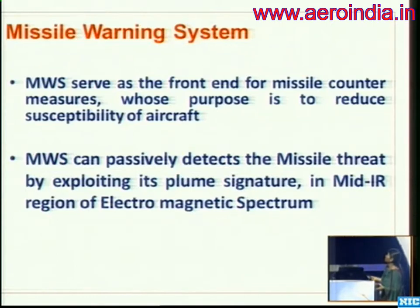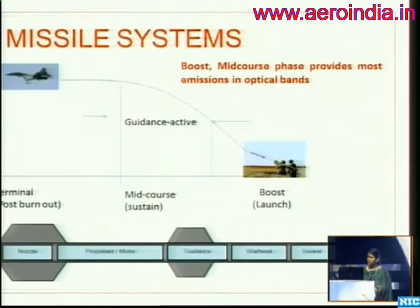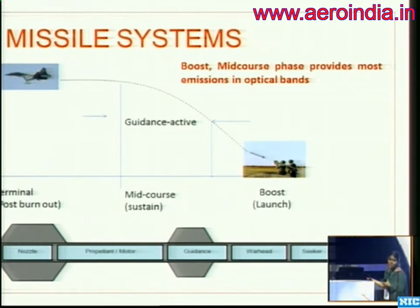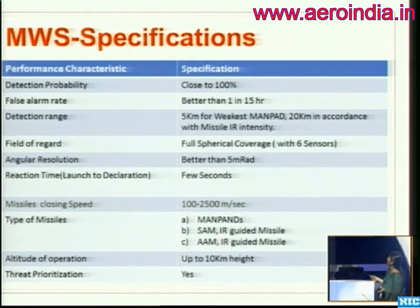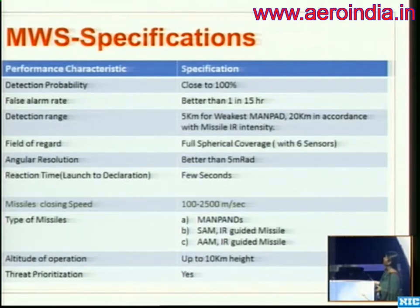The missile warning system detects missile threats by exploiting their signature in the mid-IR region of the electromagnetic spectrum. The missile system has various phases: boost, mid-course and post-burnout terminal phase. Detection should happen at the launch phase so declaration and pilot reaction can be faster. Specifications: detection probability close to 100%, false alarm rate better than one in 15 hours, detection range about 5 km for weakest man-pack threats to 20 km for missile IR intensities, full spherical coverage with six sensors, angular resolution better than 5 milliradians, reaction time 1 to 2 seconds, altitude of operation approximately 10 kilometers.